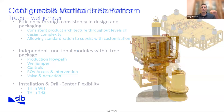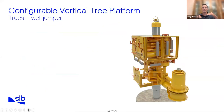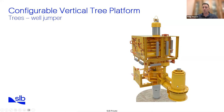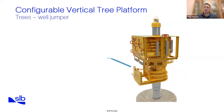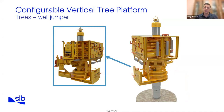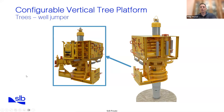These next slides physically illustrate the philosophy using our vertical monobore tree platform. Let's talk about the well jumper module first. What you see here is a vertical tree on a tubing head spool with a simple choke flow and a vertical well jumper. To configure this to a horizontal well jumper, it's simply a matter of removing that vertical jumper and repackaging the horizontal jumper in the rear annulus side quadrant of the tree. The conversion from a vertical to a horizontal well jumper tree has zero impact to the remainder of the product architecture — very impactful.